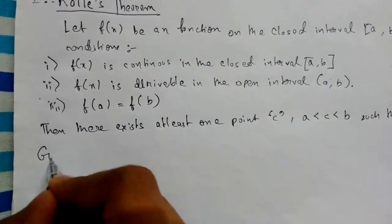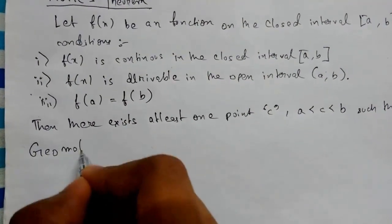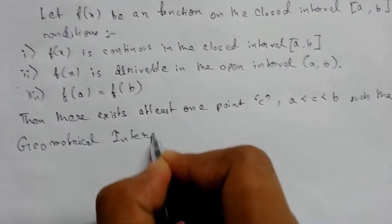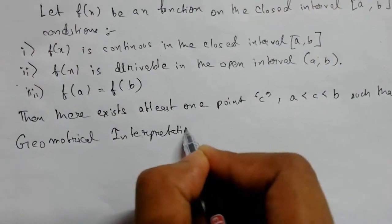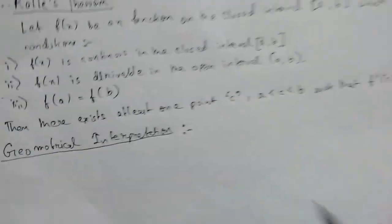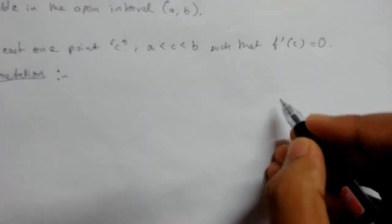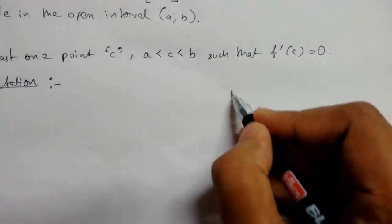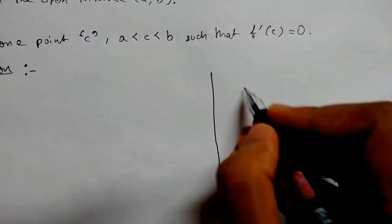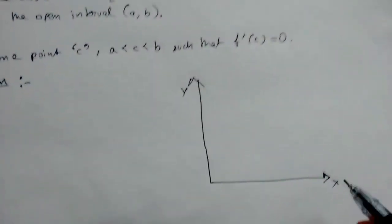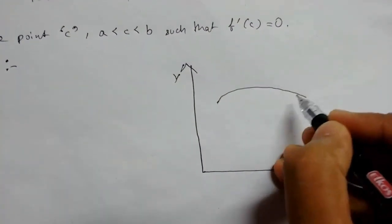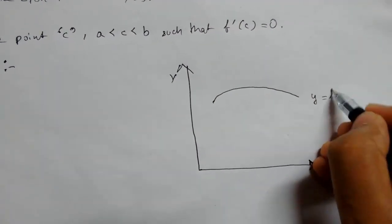Geometrical interpretation. To understand Rolle's Theorem via geometry, let me take the axis: this is our x-axis, this is our y-axis. So let us consider a continuous curve that is y equals f(x).